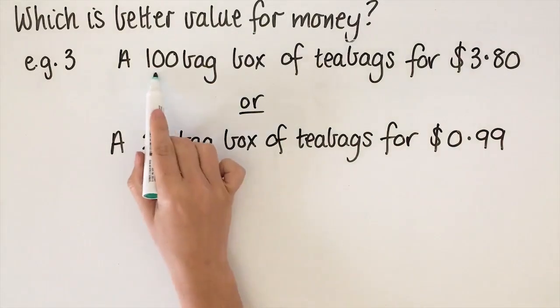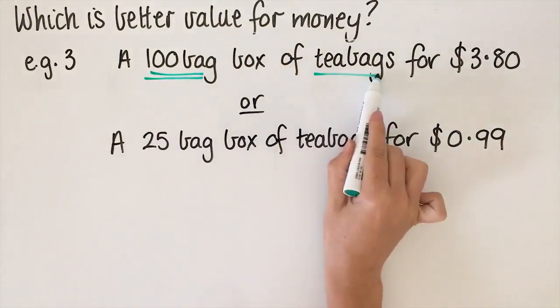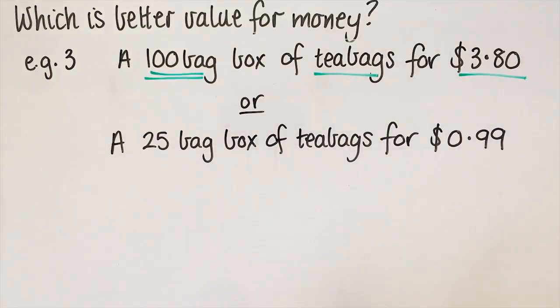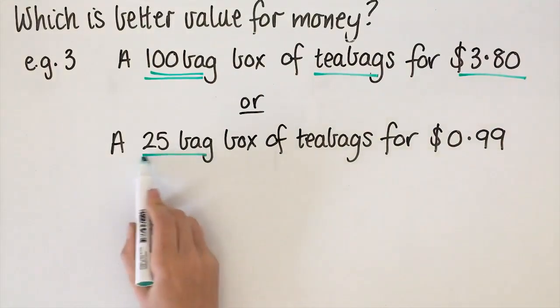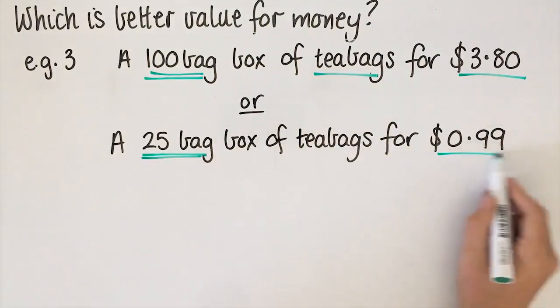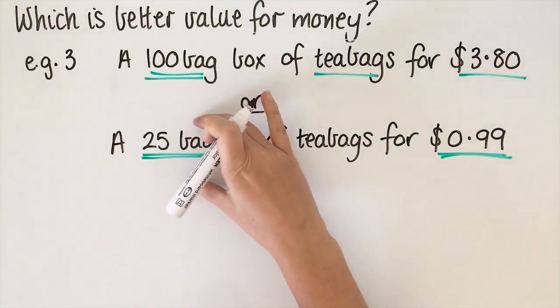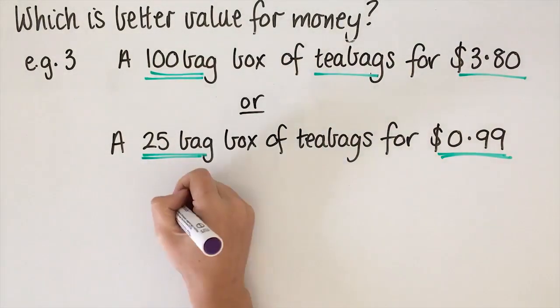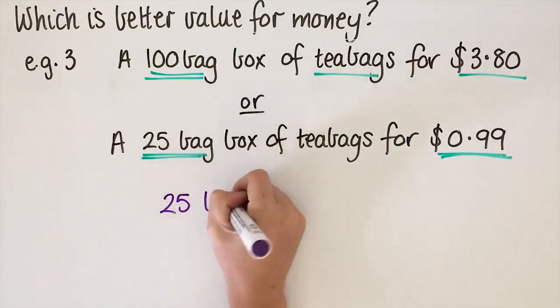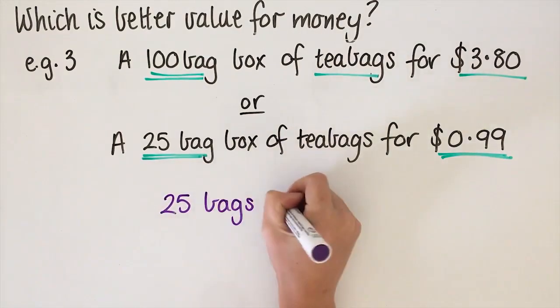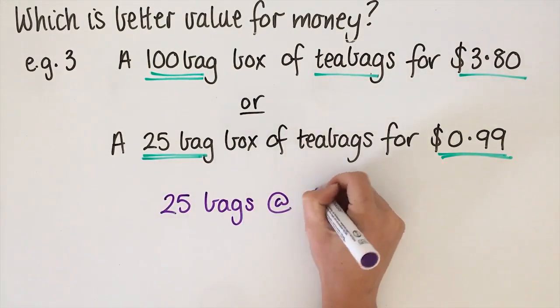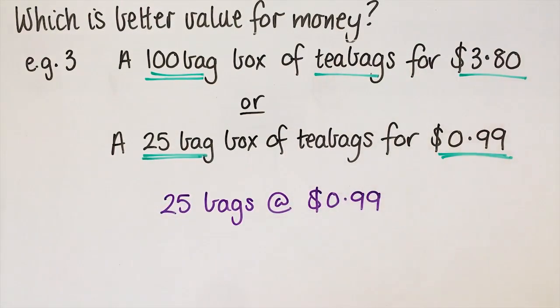For this last one, we've got 100 bag box of tea bags for $3.80, or we've got a 25 bag box for 99 cents. So this isn't grams this time, it's per bag. But we need to do the same process. We want to make the smaller one the same as the bigger one. So we've got 25 bags at $0.99.